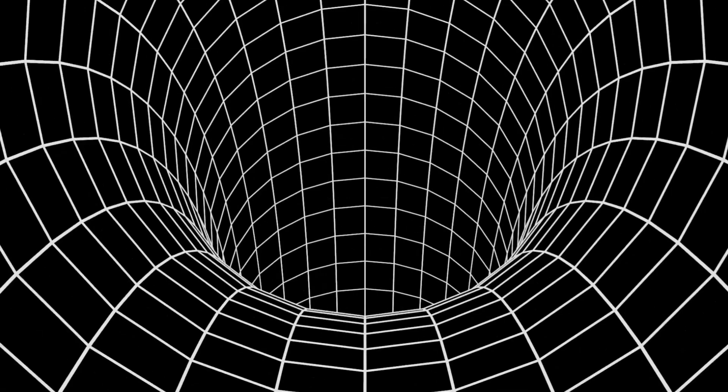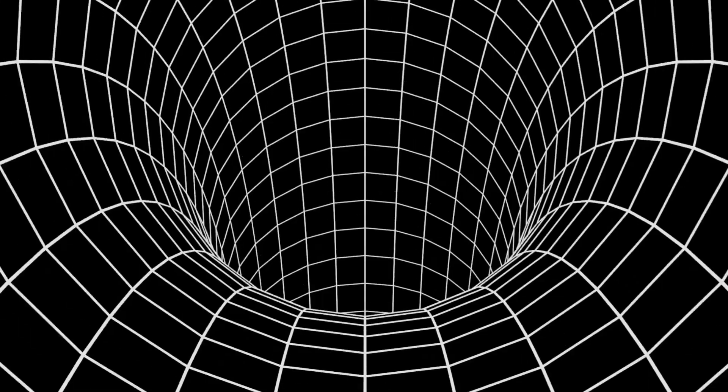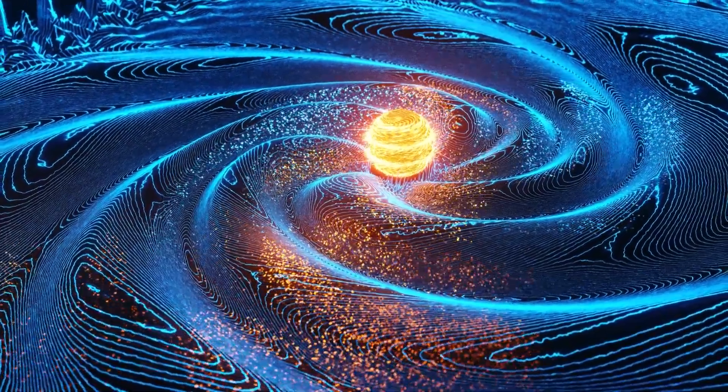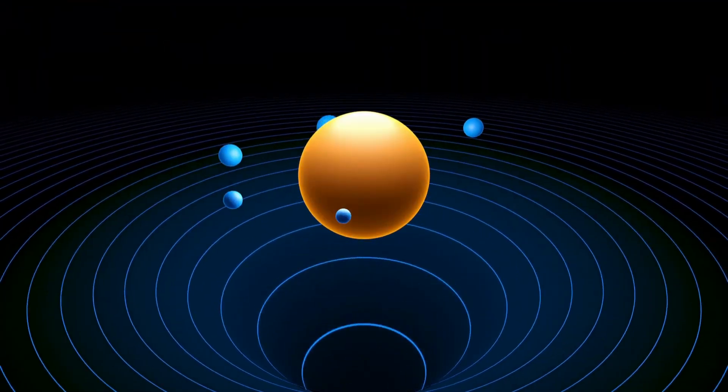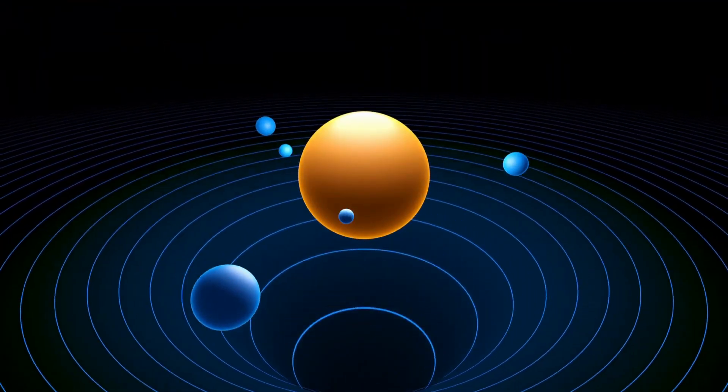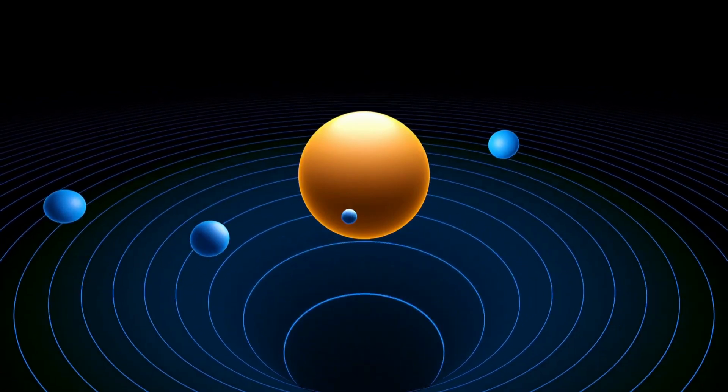That is, gravity arises from how objects with mass and energy warp or bend the fabric of space and time. The curved space and time mentioned above refers to the gravitational field. The more energetic an object is, the stronger its gravitational field, and the more pronounced the deformation it causes.